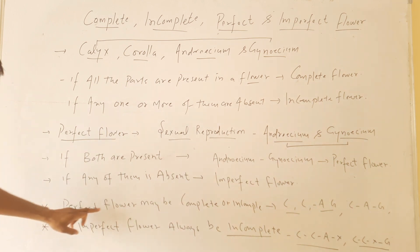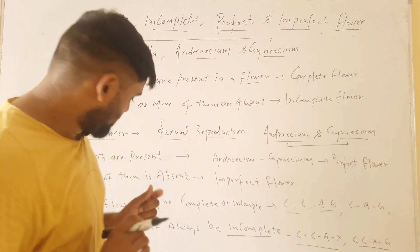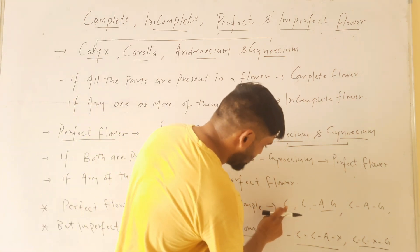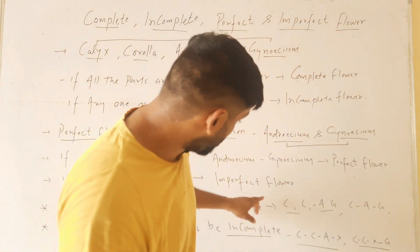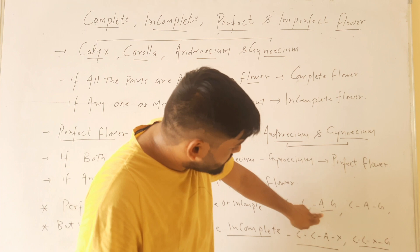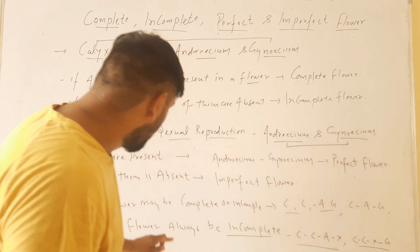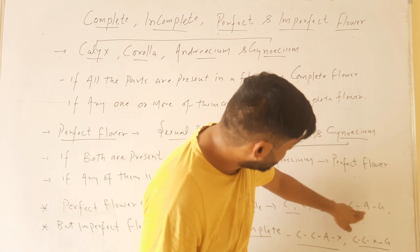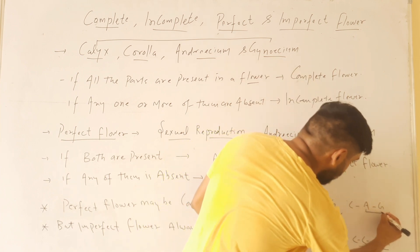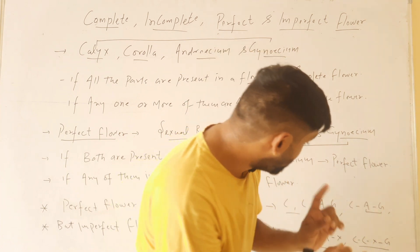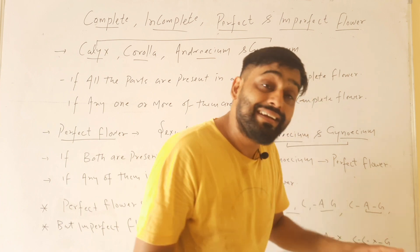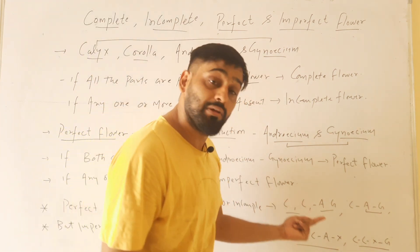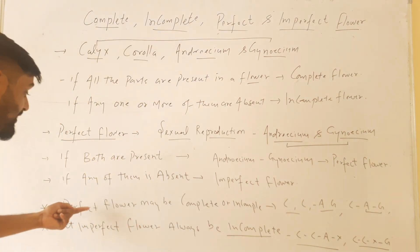Now look at this situation: a perfect flower may be complete or incomplete. Here we have all four parts — calyx, corolla, androecium, and gynoecium — so it is a complete flower, and it is also perfect because androecium and gynoecium are both present. In another situation, corolla and androecium and gynoecium are there, but calyx is absent — so it is incomplete but still perfect. So a perfect flower may be complete or incomplete.